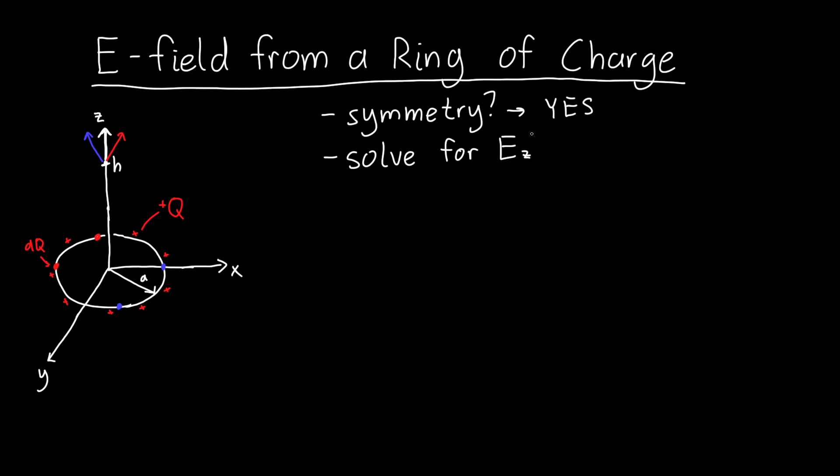This means that all we need to do is solve for Ez. Instead of needing to solve for the x, y, and z components, we only need to solve for the z component — and that's because we used symmetry.